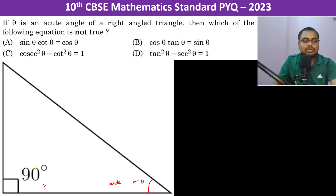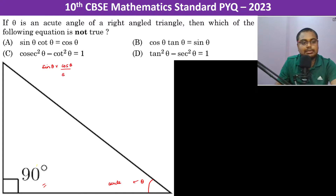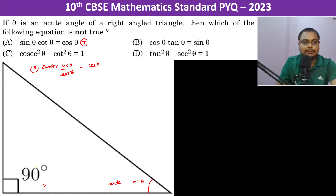The first equation: sine theta multiplied by cot theta. Cot theta equals cos theta divided by sine theta, and since sine theta is not zero, we can cancel it — giving cos theta. So option A is true.